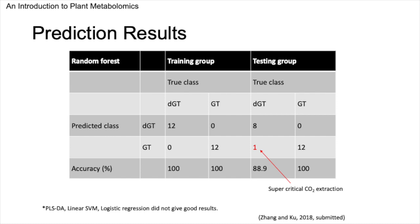This slide demonstrates the efficacy of the random forest model in classifying decaffeinated (DGT) and regular green tea (GT). The model showed perfect accuracy in the training set, correctly identifying every instance of DGT and GT. In the testing set, accuracy slightly decreased to 88.9% due to one misclassified instance of GT as DGT, which may be attributed to the complex nature of decaffeination by supercritical carbon dioxide extraction. Despite this, the model proved to be strong, with solid performance on both familiar and new data. Alternate methods like PLSDA and SVM proved less effective, emphasizing the random forest's robustness for this particular dataset.